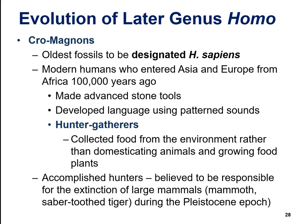Neanderthals are a separate species. Cro-Magnons, which you've likely heard of, are actually designated as Homo sapiens — still different from current humans but the same species. They made advanced stone tools, developed language, and were hunter-gatherers who collected food from the environment. They were also skilled hunters — it's believed Homo sapiens played a role in the extinction of large Pleistocene mammals like the woolly mammoth and saber-toothed cat because they were such effective hunters.